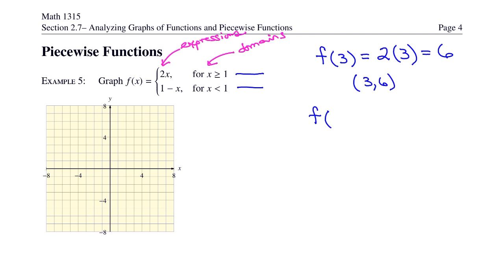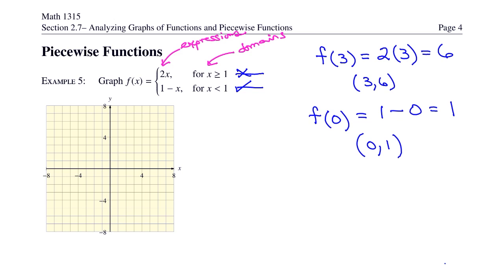What if you want f of 0? Find where 0 falls in the piecewise definition. Is 0 greater than or equal to 1? No. Is 0 less than 1? Yes. So use the second definition: 1 minus 0 equals 1. That tells us the point 0 comma 1 is on the graph. If a piecewise function doesn't cover all x values and you try to evaluate it at an uncovered value, the function is undefined.